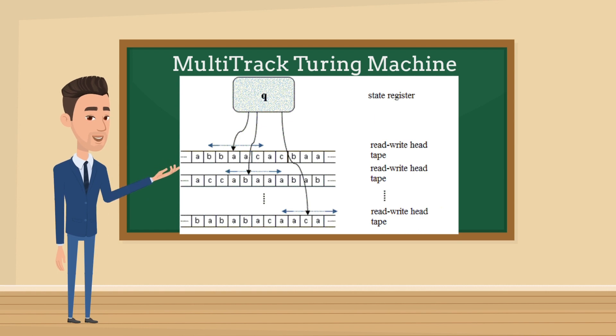In a Multi-Track Turing Machine, multiple tracks are used to represent different aspects. One of the tracks will hold the number to be checked, and the other tracks will be used for intermediate calculations and decision making.